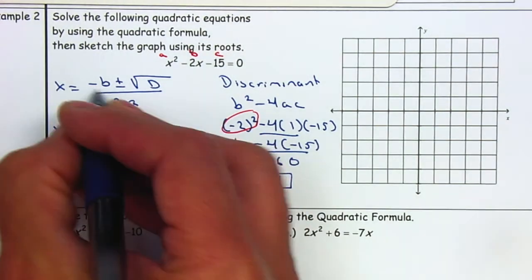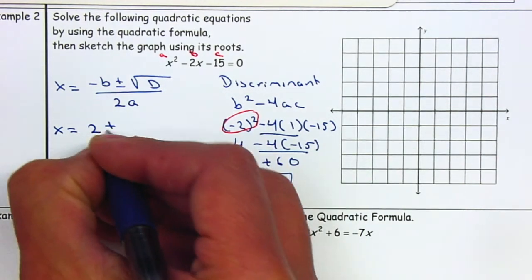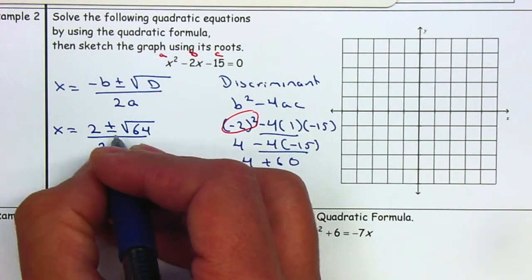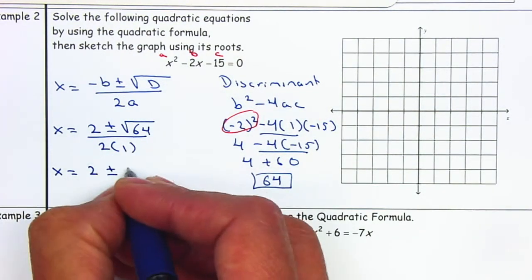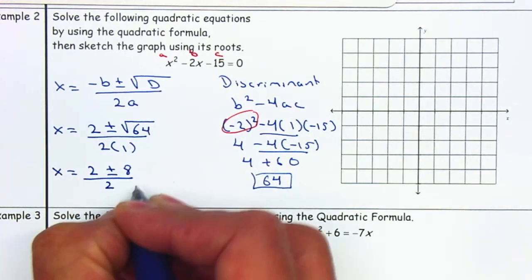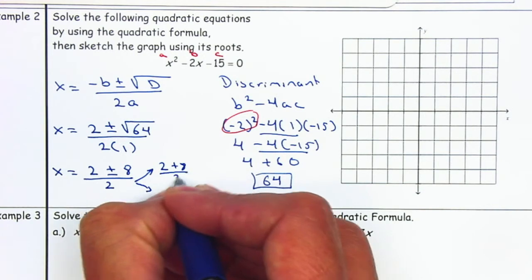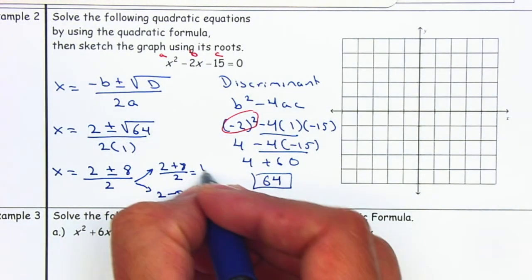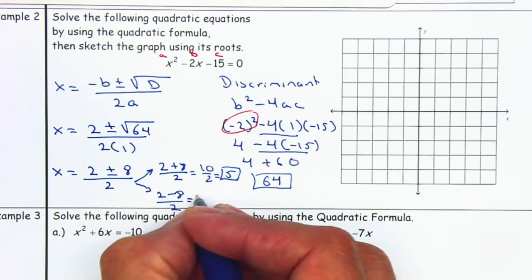Now we can plug it in. Negative B — remember, negative B means the opposite of B. B is negative 2, so this will be positive 2, plus or minus the square root of the discriminant, which is 64, all over 2 times A, where A is 1. Simplifying: 2 plus or minus the square root of 64 is 8, all over 2. I'm going to separate into two solutions: 2 plus 8 over 2 gives 10 over 2, which equals 5; and 2 minus 8 over 2 gives negative 6 over 2, which equals negative 3.